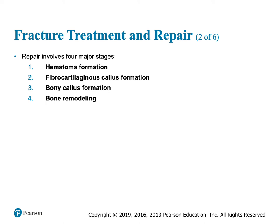How do we heal a bone? There are four major steps. First, there's bleeding — bone is very vascular — and that forms a hematoma, like a big blood clot. Then we have fibrocartilaginous callus formation. That becomes a bony callus. Finally, that bony callus has a bump on it, so we remodel it.